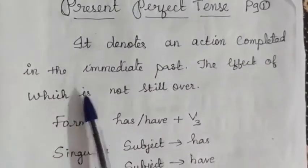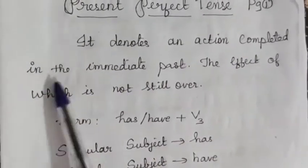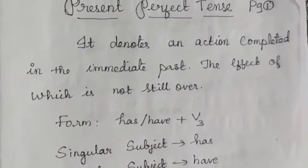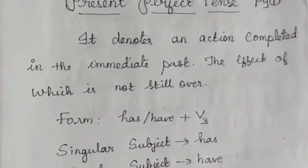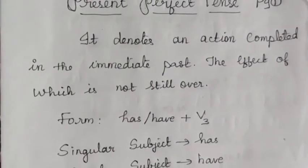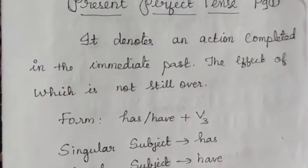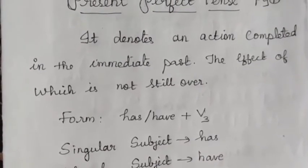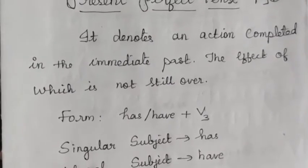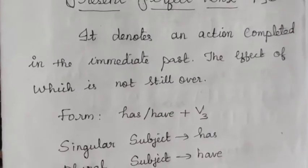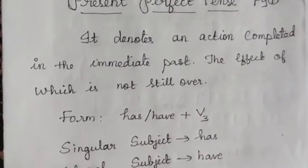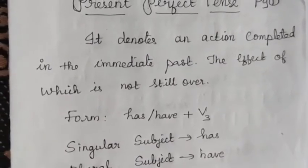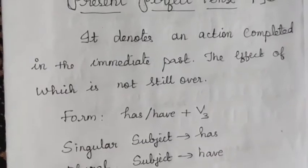Present perfect tense denotes an action completed in the immediate past, the effect of which is not still over. For example, when you have written your homework — you say 'I have completed my homework.' That is present perfect tense.